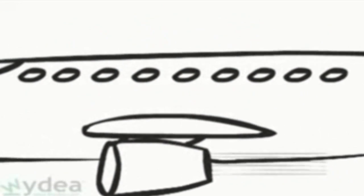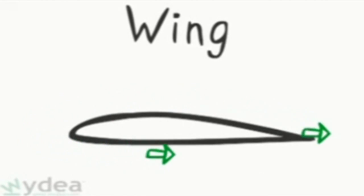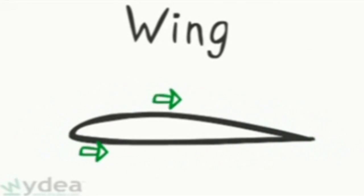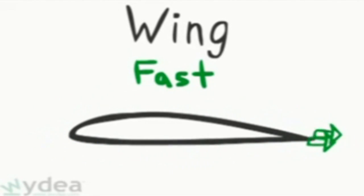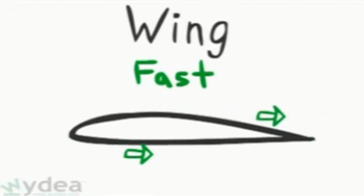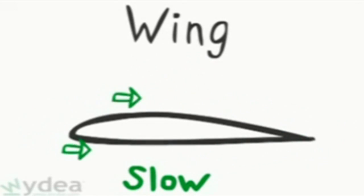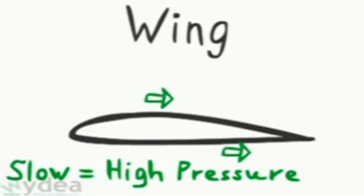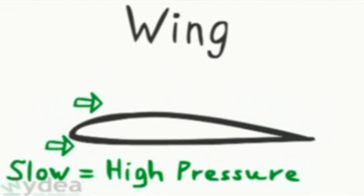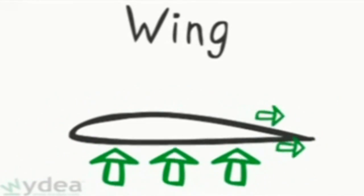Airplanes also follow Bernoulli's principle. The wing of an airplane is designed to let air move more rapidly over its upper surface, therefore decreasing pressure. Because air is not moving as fast below the wing, pressure increases, pushing the wing up. This is called lift.